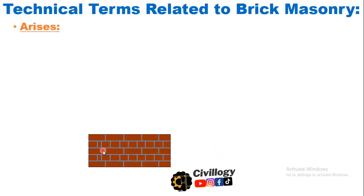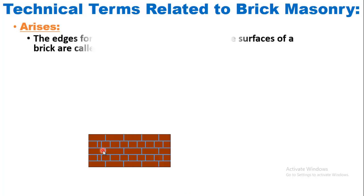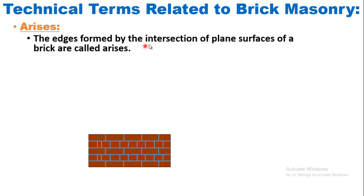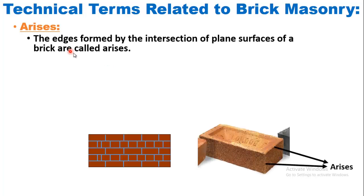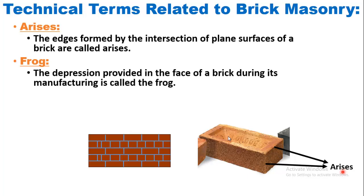What are arises? The edges formed by the intersection of plain surfaces of a brick are called arises. As you can see in the picture, the edges of the bricks are called arises. What is a frog? The depression provided in the face of a brick during its manufacturing is called a frog. The depression shown in the figure is called a frog.